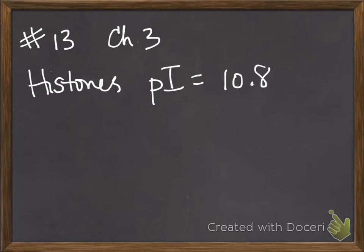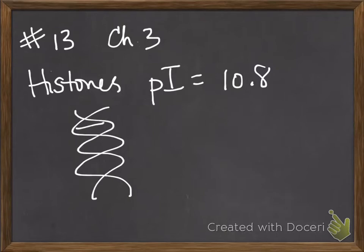The question says that histones are found in the nuclei of eukaryotic cells and they're tightly bound to DNA. You've got your DNA and then your histone complexes bound to the DNA.